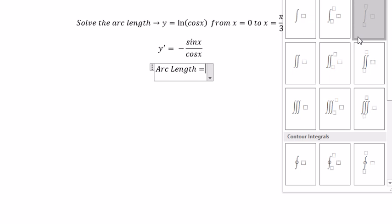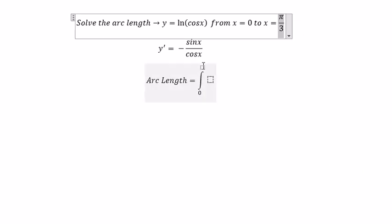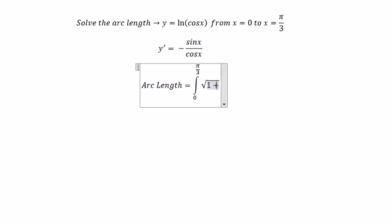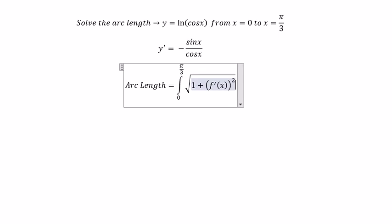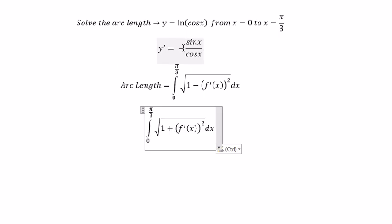Next, we can set up the arc length formula: the integral from 0 to π/3 of the square root of 1 plus the first derivative of the function squared, ds. We substitute the derivative we found into this expression.